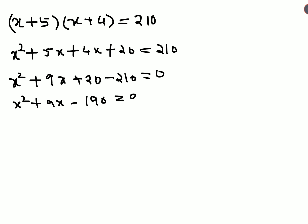Now factors of 190 can be 19 and 10, which can be written in this form: x² plus 19x minus 10x minus 190 equals to 0. Because 19x minus 10x will get you 9x.